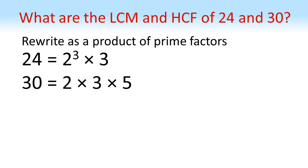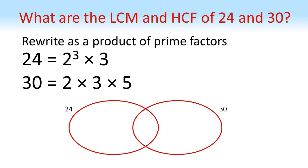We're now going to put these numbers into a Venn diagram. The left oval is for 24, the right oval is for 30, and the middle is the shared space for common factors. Both numbers have a 2 and a 3, so those go in the middle. The remaining two 2's from 24 go on the left, and the 5 from 30 goes on the right.